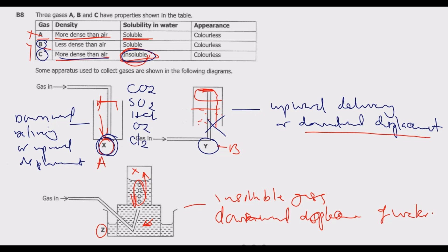Gases that can be collected using Y are those less dense than air: we have hydrogen, ammonia, methane, and carbon monoxide. All of these can be collected by Y because they are less dense than air. So you can choose any of these.